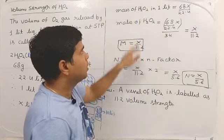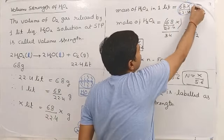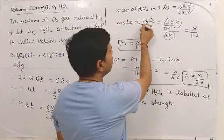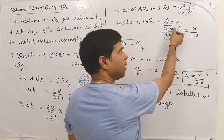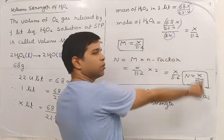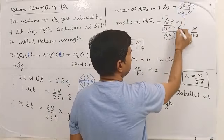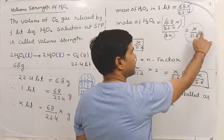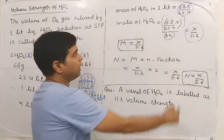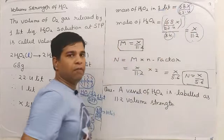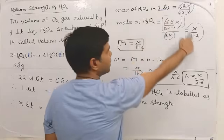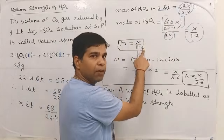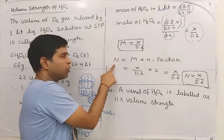From this mass, we can find the number of moles of H2O2. Since the molar mass of H2O2 is 34, the number of moles = (68x / 22.4) / 34 = x / 11.2. Since these moles are present in 1 liter, the molarity of H2O2 = x / 11.2, where x is the volume strength.